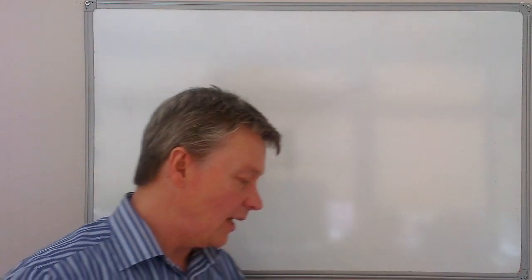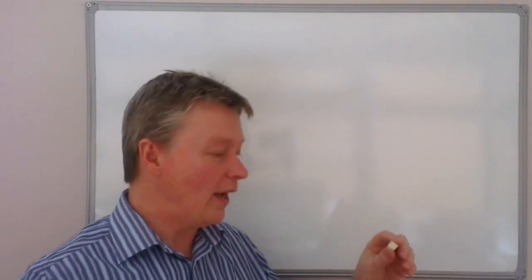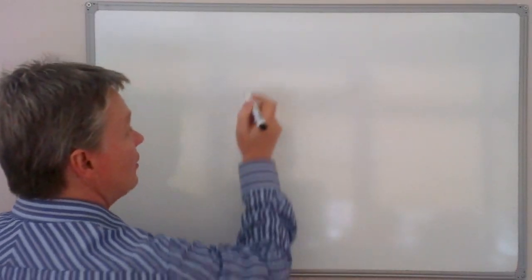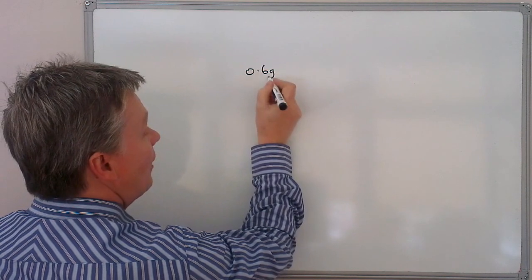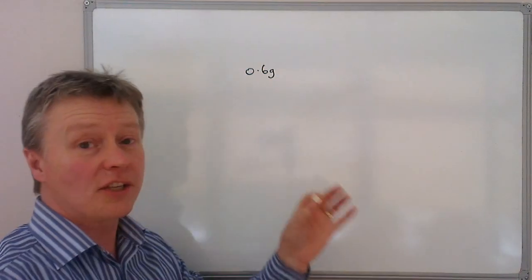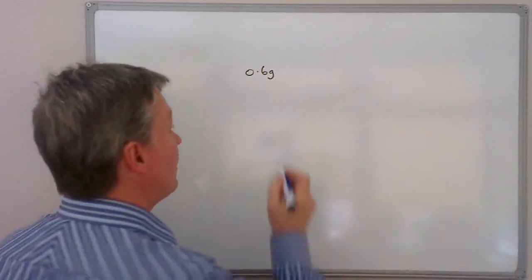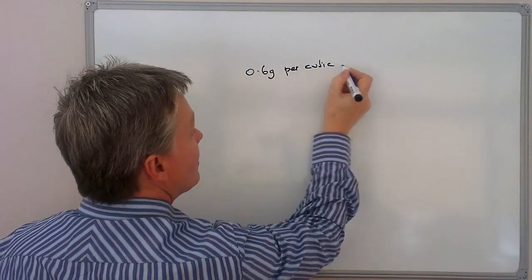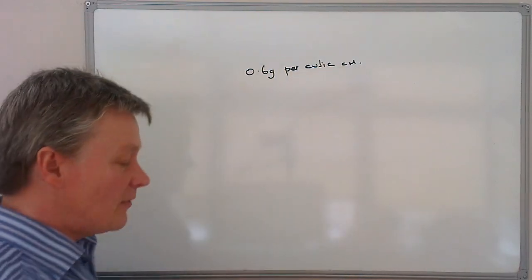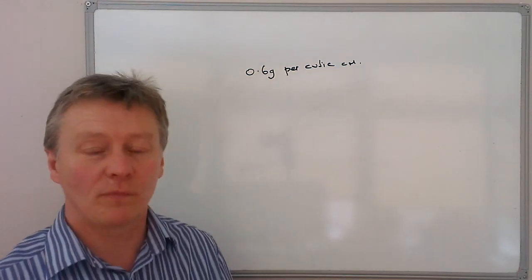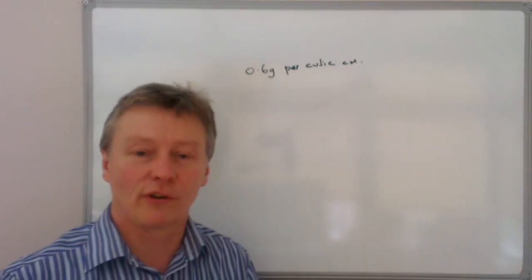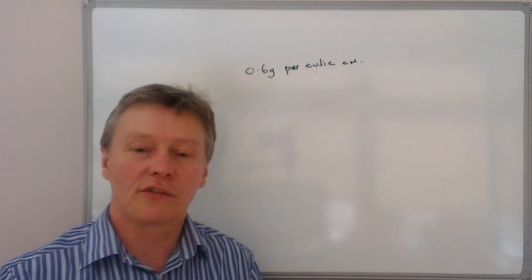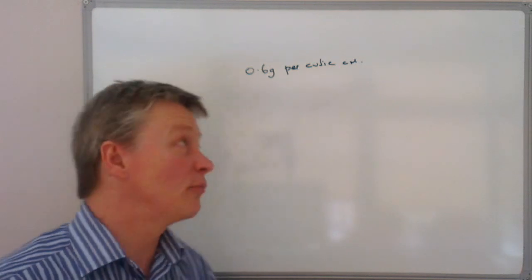So if I take my clay and weigh it, it actually weighs 0.6 grams, and in this case per cubic centimeter. So per cubic centimeter, and that gives us a clue now to set up a measurement or a formula that we can use for calculating density of products.